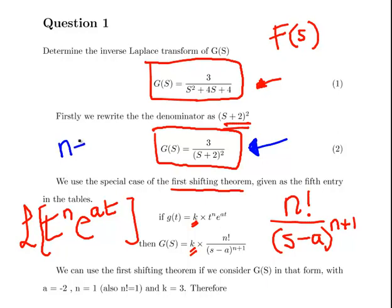Let's actually write this up here. n plus 1 is equal to 2. We can have a equal to minus 2. And we can have n factorial as the numerator.